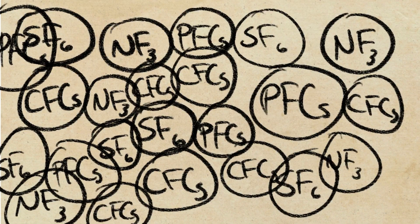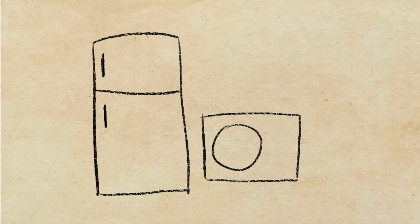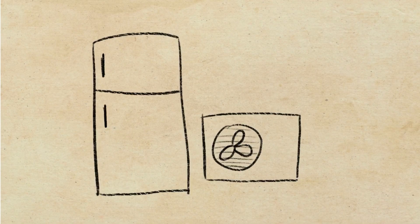Then, we've got fluorinated gases. There are different kinds, but the ones you might be most familiar with are in your fridge. It's used to keep things cool.